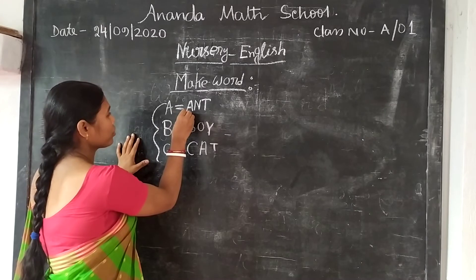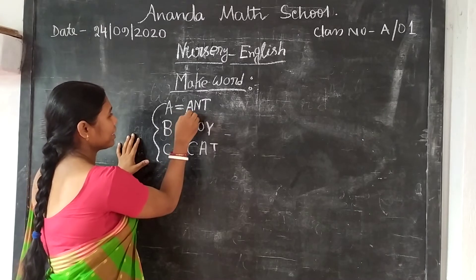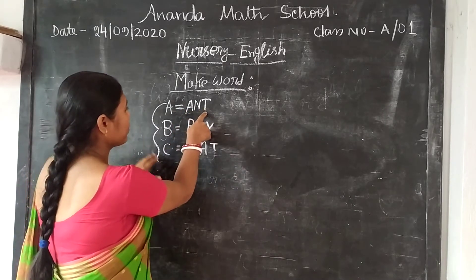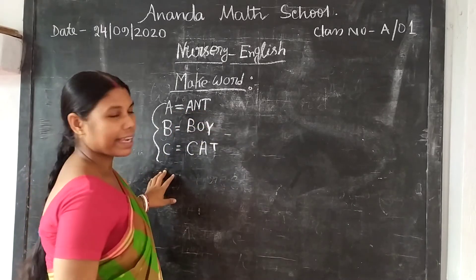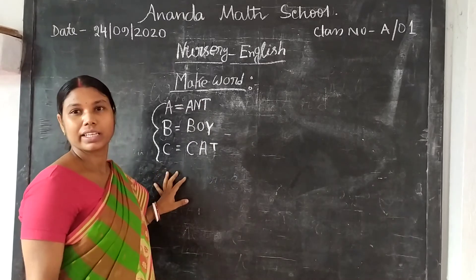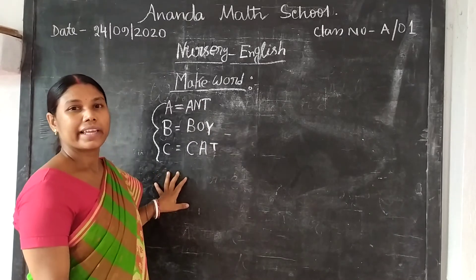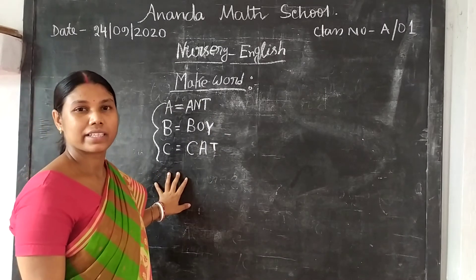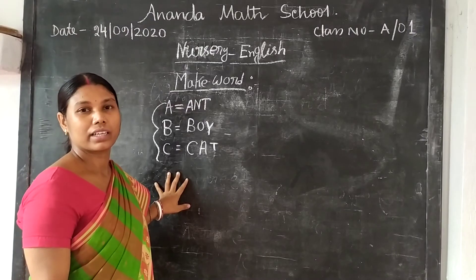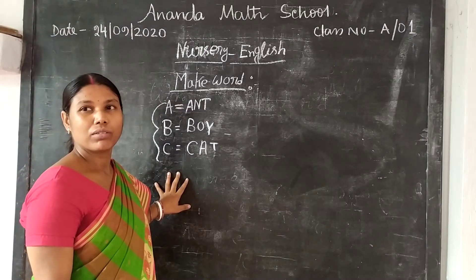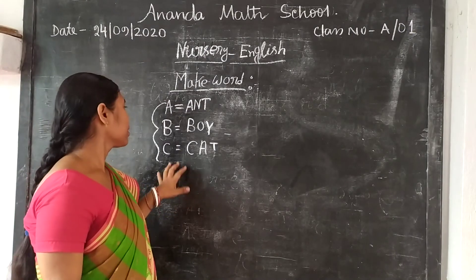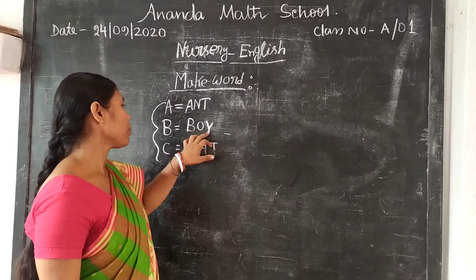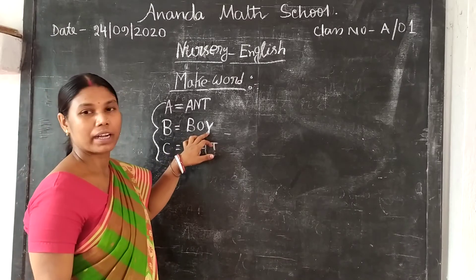The first letter indicates that this should be introduced. A N T and. The next is to Dex. Now B — do B for B O Y.